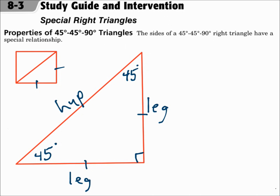If you take a square and divide it diagonally, that gives you two separate 45-45-90 triangles. Each of those triangles has a right angle and the two acute angles are both 45 degrees. Just the same as the sides of a square are all congruent, those match up with the two congruent legs of the 45-45-90 triangle, and then the hypotenuse is across from the right angle.